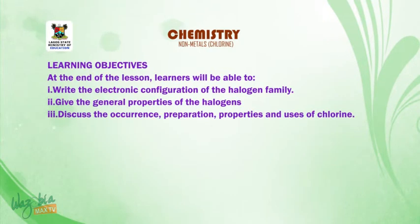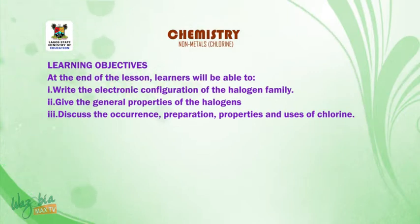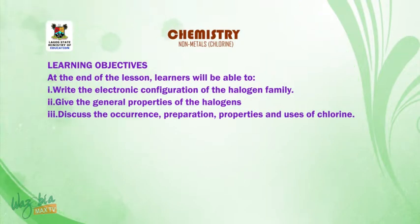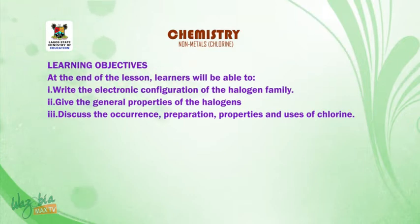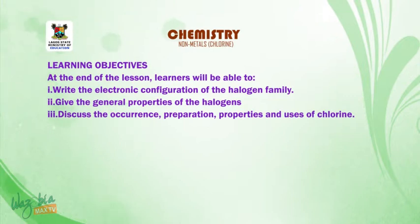Learning objectives for this lesson. At the end of the lesson, learners will be able to: 1. Write the electronic configuration of the halogen family. 2. Give the general properties of the halogens. 3. Discuss the occurrence, preparation, properties and uses of chlorine.